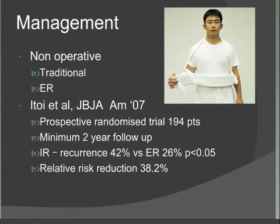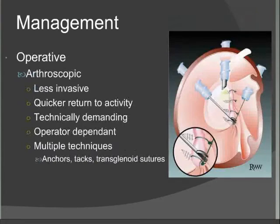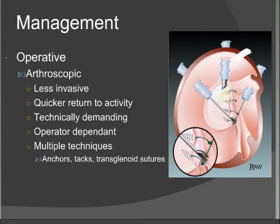Moving on to operative treatment — in the last decade or two, arthroscopic treatment has probably become the most common approach. It's less invasive and patients return to work or sport more quickly. However, it is technically demanding and very operator-dependent. There are multiple fixation techniques which have evolved, and the literature shows clearly improved outcomes as techniques progressed from transglenoid sutures to suture anchors.